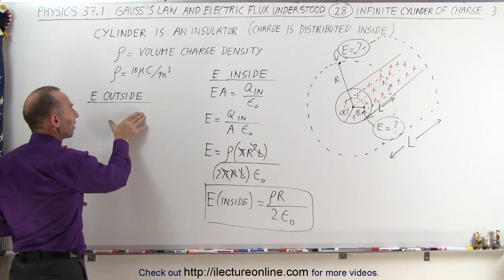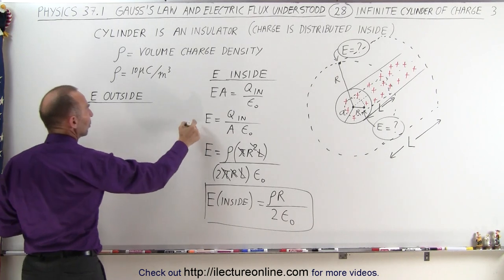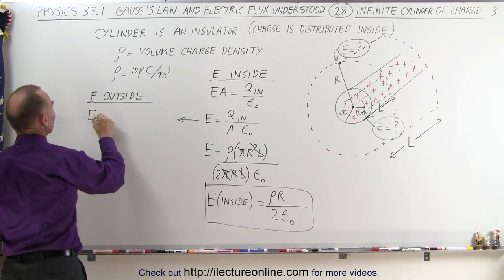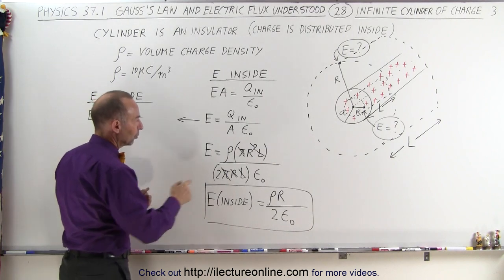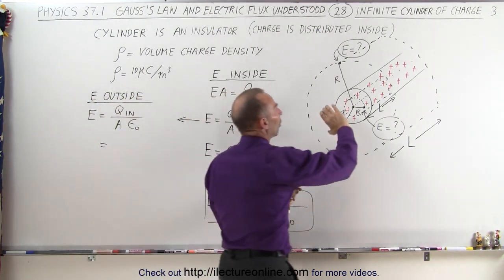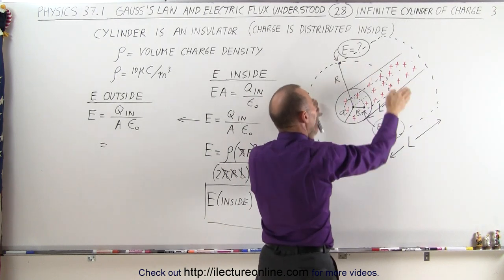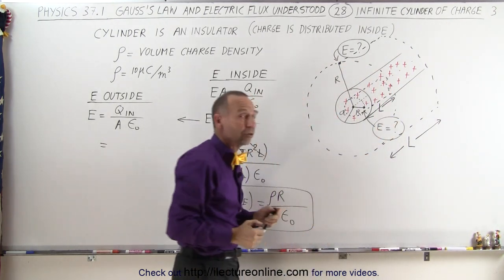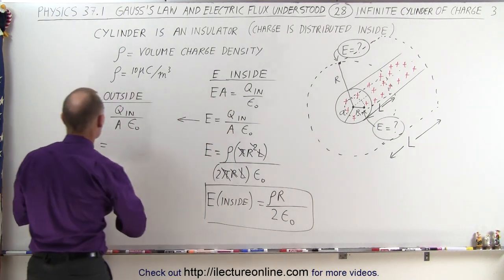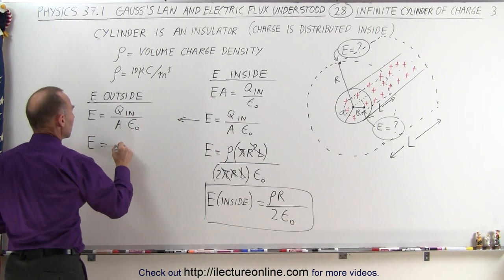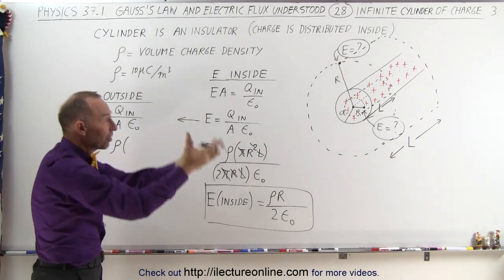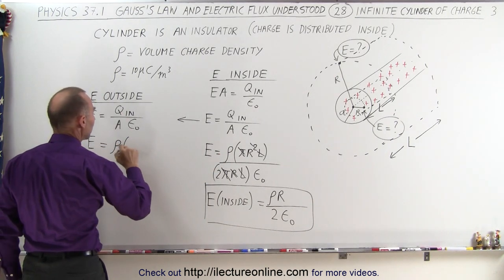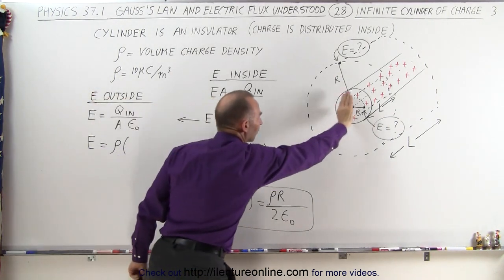Now for the outside: we use the same equation, E equals Q_inside divided by A times epsilon sub-naught. The Q_inside is calculated the same way, but in this case only the cylinder contains charge — the rest of the Gaussian surface outside the cylinder does not. So to get Q_inside, we take the volume charge density times the volume of the inner cylinder that has the charge, not the Gaussian surface. That's the area of the end, which is pi A squared times the length L.